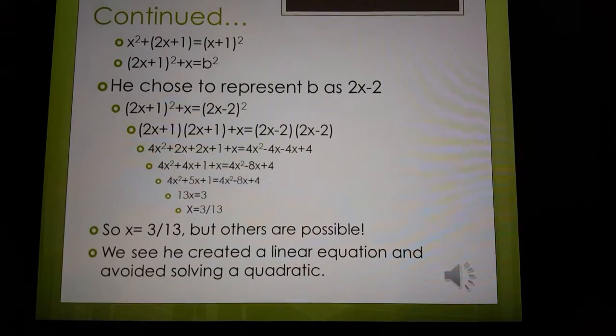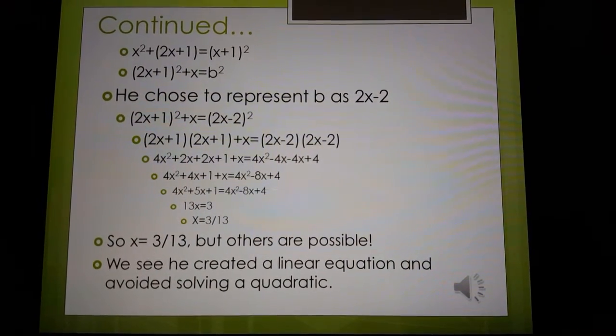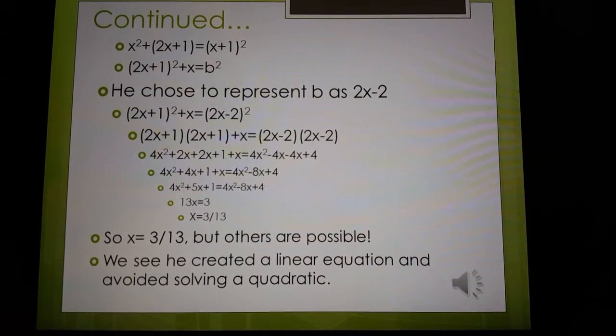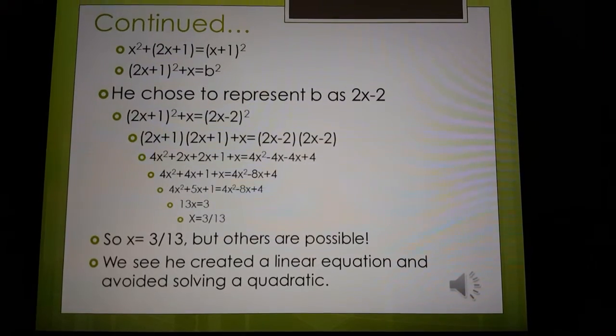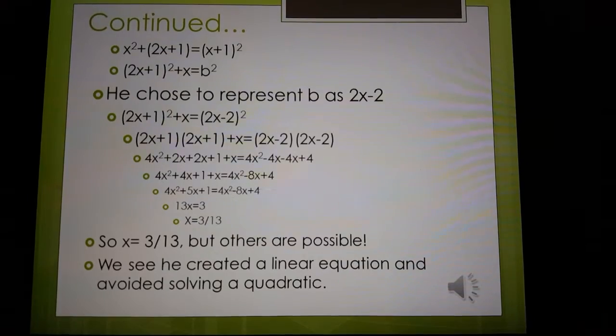The first one is already a square. x squared plus 2x plus 1 equals (x+1) squared. But we still need to find the second one to give us a square.